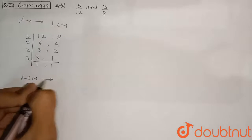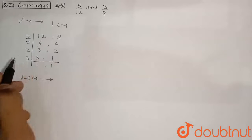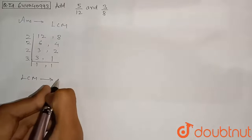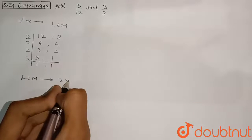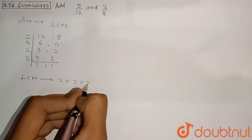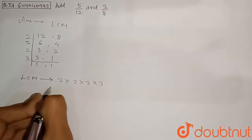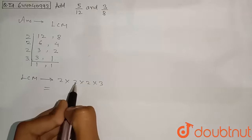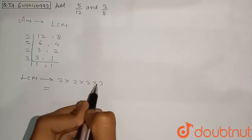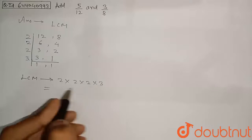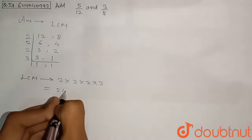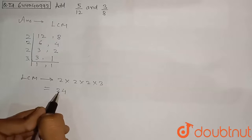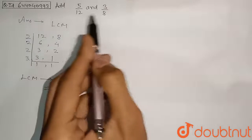The LCM is the product of all the divisors used: 2 × 2 × 2 × 3. Solving this: 2 × 2 = 4, 4 × 2 = 8, and 8 × 3 = 24. So the LCM of 12 and 8 is 24, which will be the denominator of our answer.